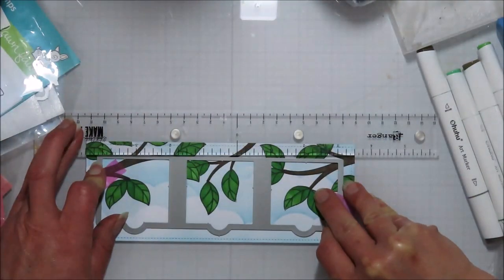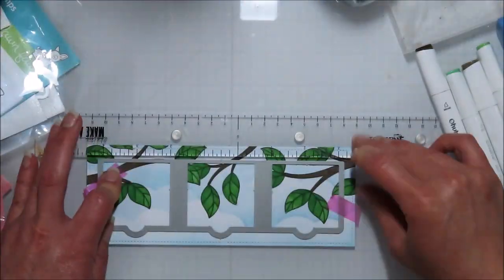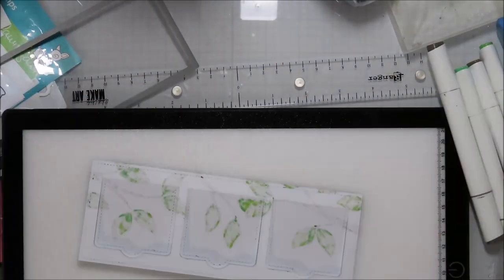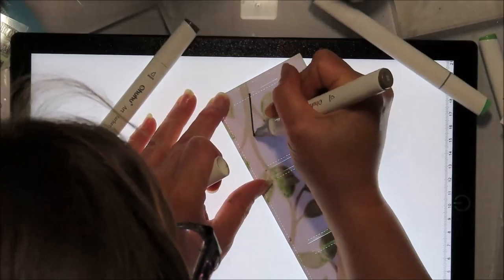So I'm lining this up with my ruler here to try to make sure that I get it centered as best as I can. I am not a measure twice cut once kind of girl. I'm a measure once and it looks good but for this one I did actually try to make sure that it was where it was supposed to be.